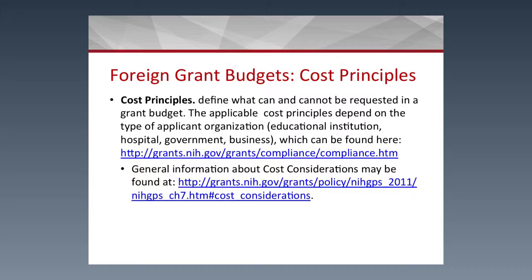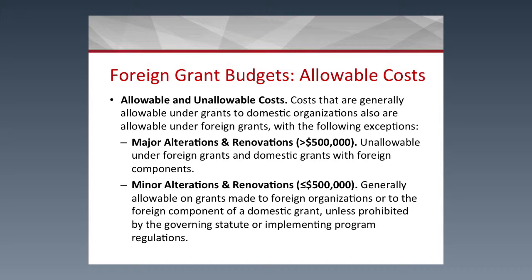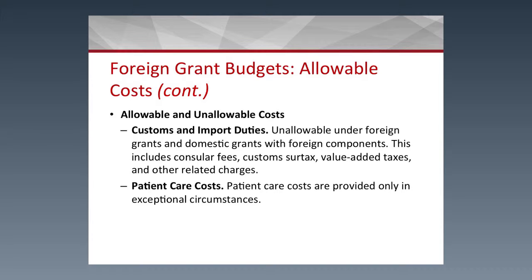This is a snapshot of the cost principles, which tell you what you can and cannot request. You'll want to review this section to ensure all requested costs are appropriate. Regarding allowable and unallowable costs: costs generally allowable for domestic organizations are also allowable for foreign institutions, with exceptions for major and minor alterations and renovations. Major A&R is greater than $500,000; minor A&R is $500,000 or less. Customs and import duties and patient care costs are not allowable on grants.